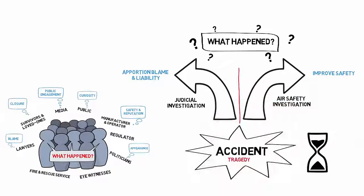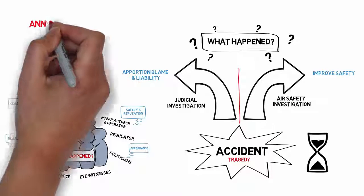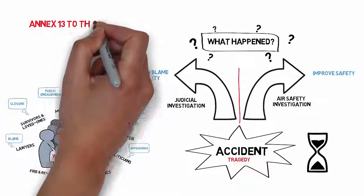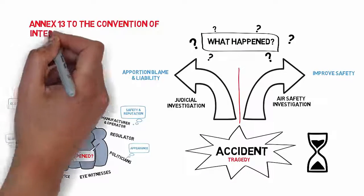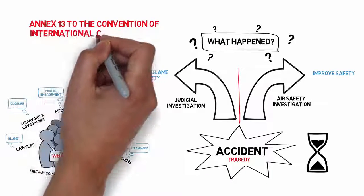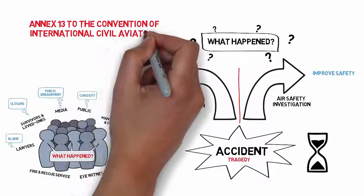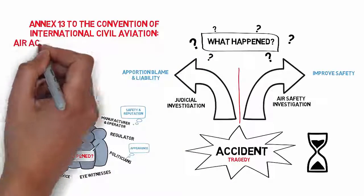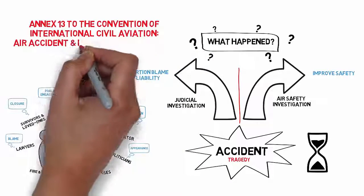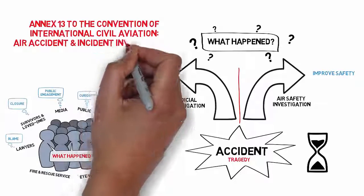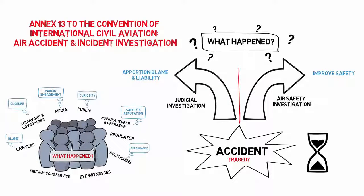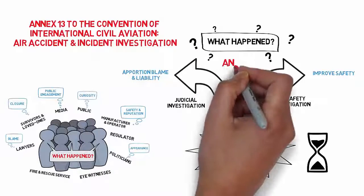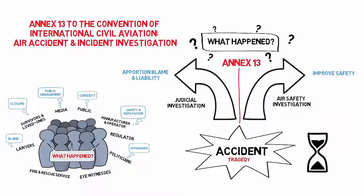There is a separation between these two investigations. An internationally agreed upon set of rules defines the terms of this separation, known as Annex 13 to the Convention of International Civil Aviation, Air Accident and Incident Investigation — or simply Annex 13 for short.